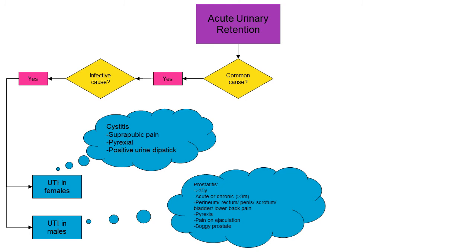Prostatitis affects patients over 35 years. It can be acute or chronic if it's over three months in duration. They may have perineum, rectal, penis, scrotal, bladder, or lower back pain. There may also be pyrexia, pain on ejaculation, and a boggy-feeling prostate when examined by PR.